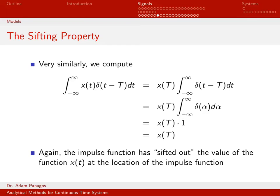We can be a little more formal with that. On the next line, I've done a change of variable: let alpha equal t minus capital T. If I differentiate both sides, that tells me that d-alpha equals dt, so I can replace the differential dt with d-alpha. Also, from the equation alpha equals little t minus capital T, when little t is infinity, alpha is infinity, and when little t is negative infinity, alpha is minus infinity. So I've gone from integration with respect to little t to integration with respect to alpha by just that simple change of variable.